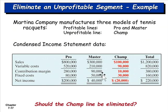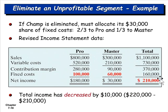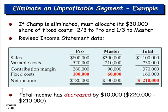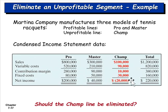Here's an example with three product lines: Pro, Master, and Champ. Champ is losing $20,000 per year, so you'd think eliminating it would raise net income from $220,000 to $240,000. But when you actually eliminate Champ, total net income falls to $210,000 from $220,000 — because the $30,000 in fixed costs now get absorbed by Master and Pro with no offsetting contribution margin of $10,000 from Champ. Net income would actually go down, so we should not eliminate Champ but instead try to make it profitable.